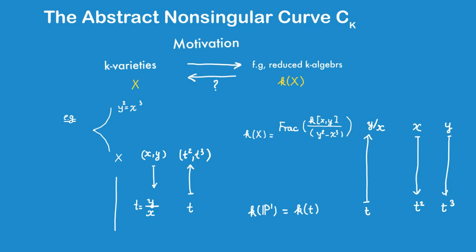Well, unfortunately not, because for example, the cubic curve here actually has the same function field as the line P1. In other words, X here, this cubic curve is birational to P1.